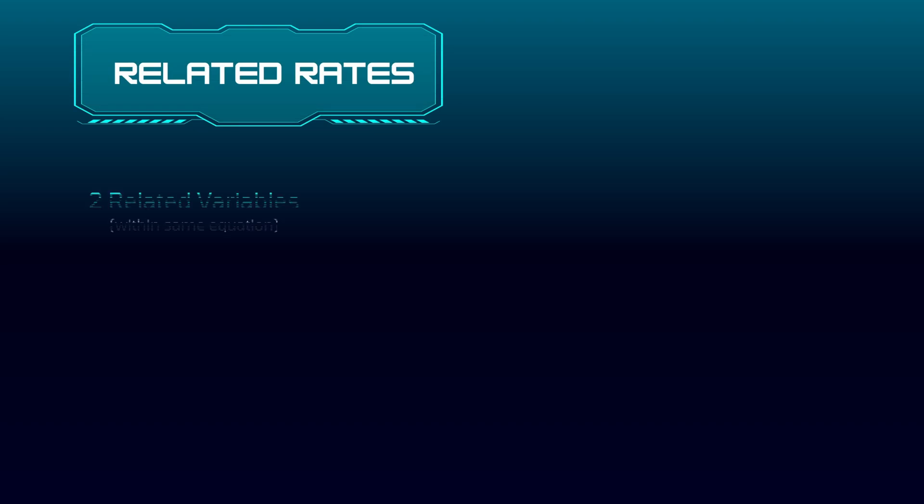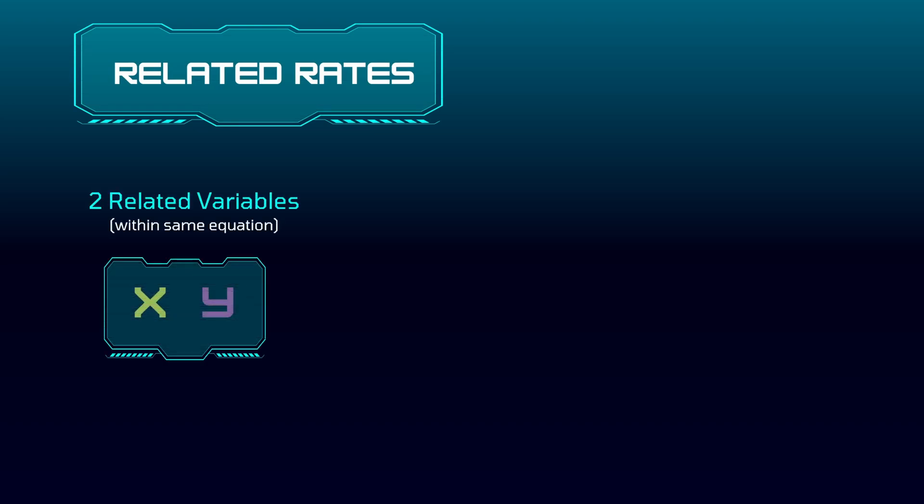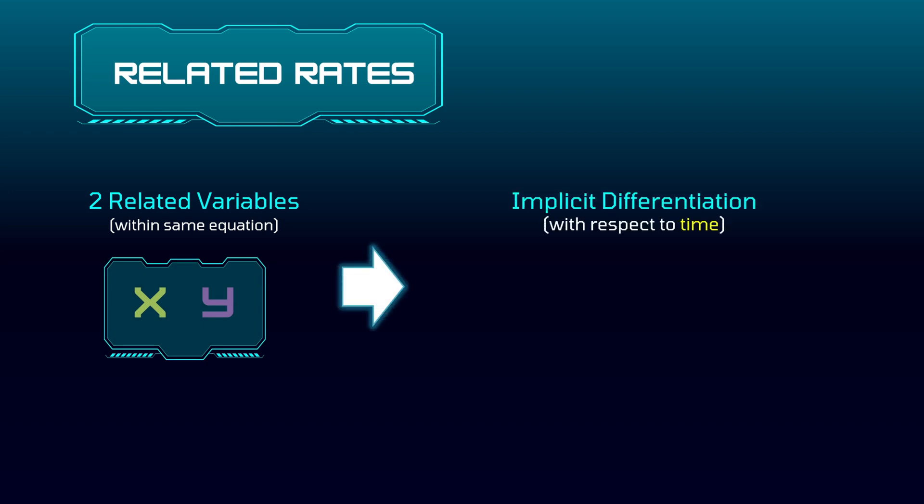Let's break down related rates. There will be two variables — let's say x and y — that are related to each other in a sense that they can be found within a single equation. And once the proper equation has been determined, we will need to do something called implicit differentiation with respect to time. By the time you're learning related rates, you've probably already been introduced to implicit differentiation. However, the implicit differentiation done in related rate problems is slightly different due to the fact that it's done with respect to time.